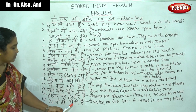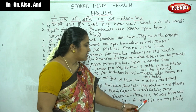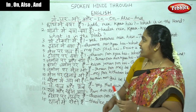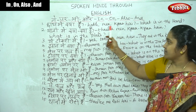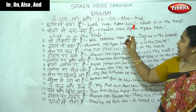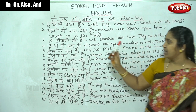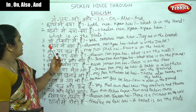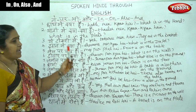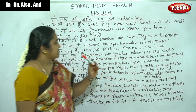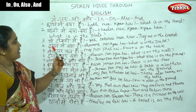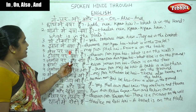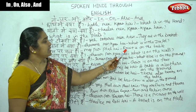Thali me roti hai — a bread is on the plate. Haat me roti hai. What is in the plate? Ye tokeri me hai — they are in the basket. Dawaat me kya hai — what is in the ink pot? Mej par phal hai — fruit is on the table.